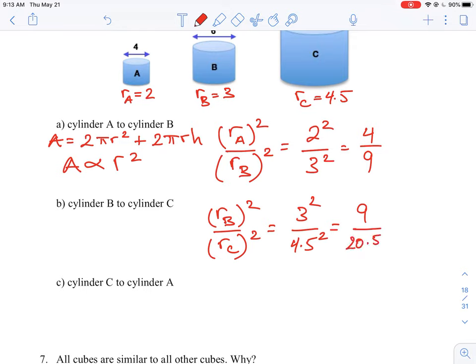So 4.5 squared is 20.25. So how would we get rid of that? Well, we could multiply top and bottom by 100. So we'll just fix that here to get rid of our decimal. And that will give us 900 over 2,025.